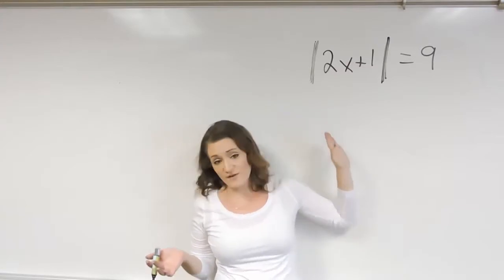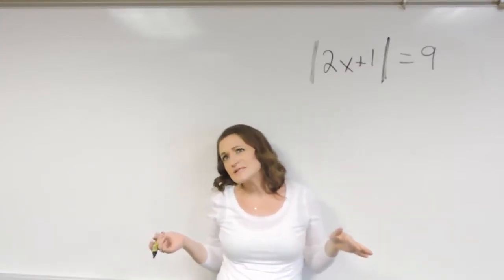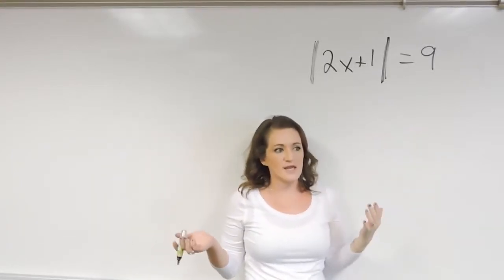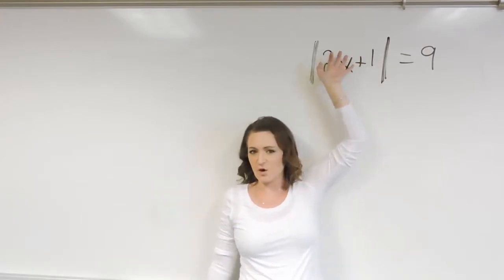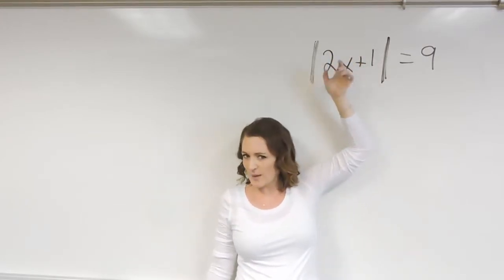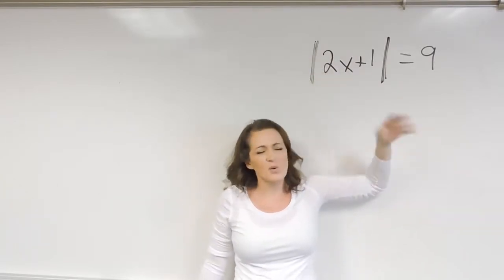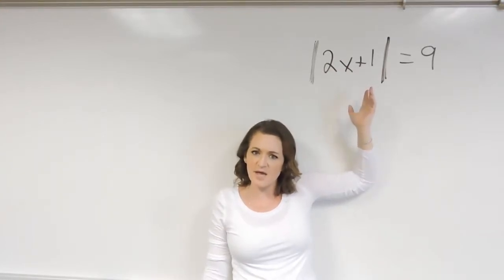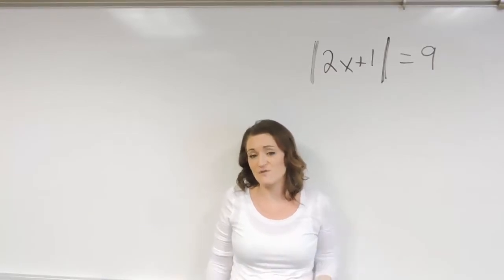So when it comes to solving absolute value equations, technically when it comes to our variable, you need to think, well, how do we know if this value inside of here was really positive or really negative? Because the absolute value bars is always going to turn it positive, but what did it start out with? Did it start out negative? Did it start out positive? And that's kind of what we need to take into consideration when we solve these.